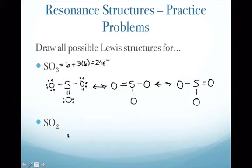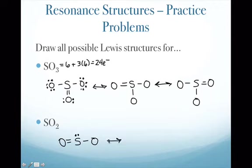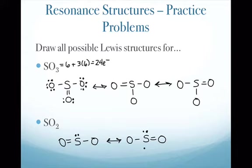For sulfur dioxide (SO2), you have O double-bonded to S, single-bonded to another O, and a lone pair on sulfur. There is only one other resonance structure, showing the double bond on the other side. You only draw resonance structures when the directions specifically ask you to include them.